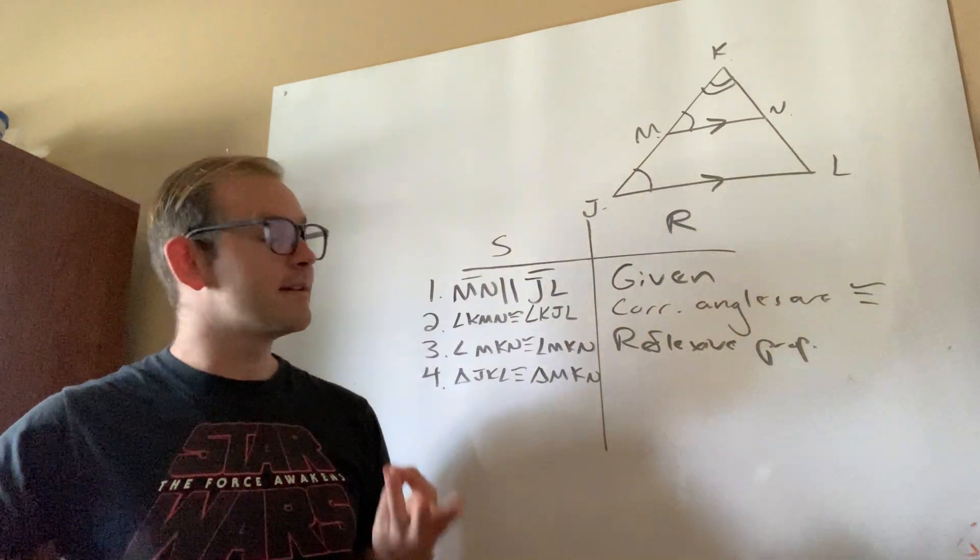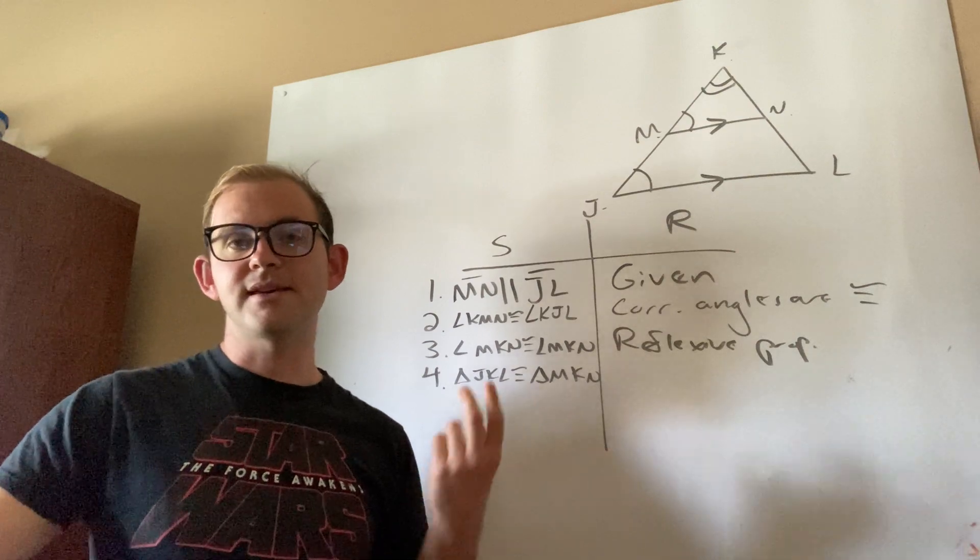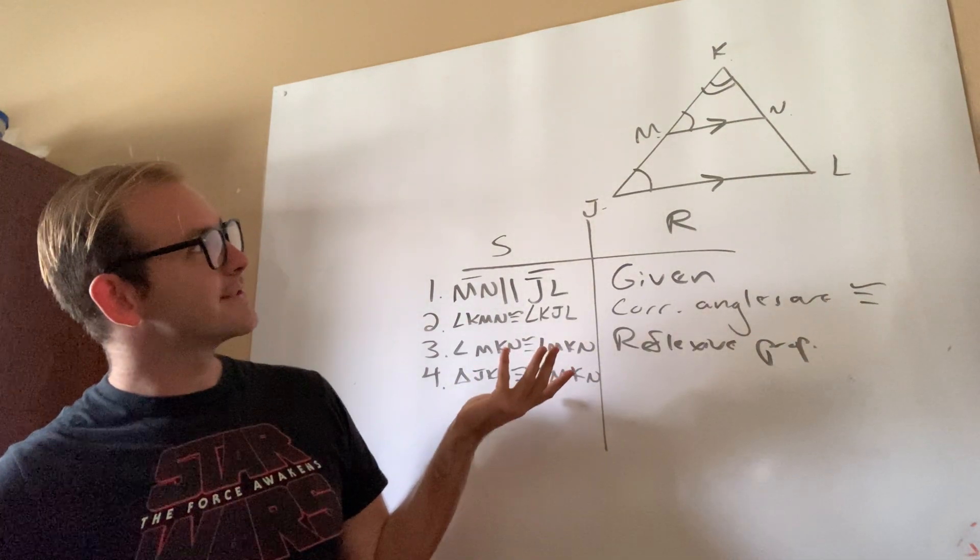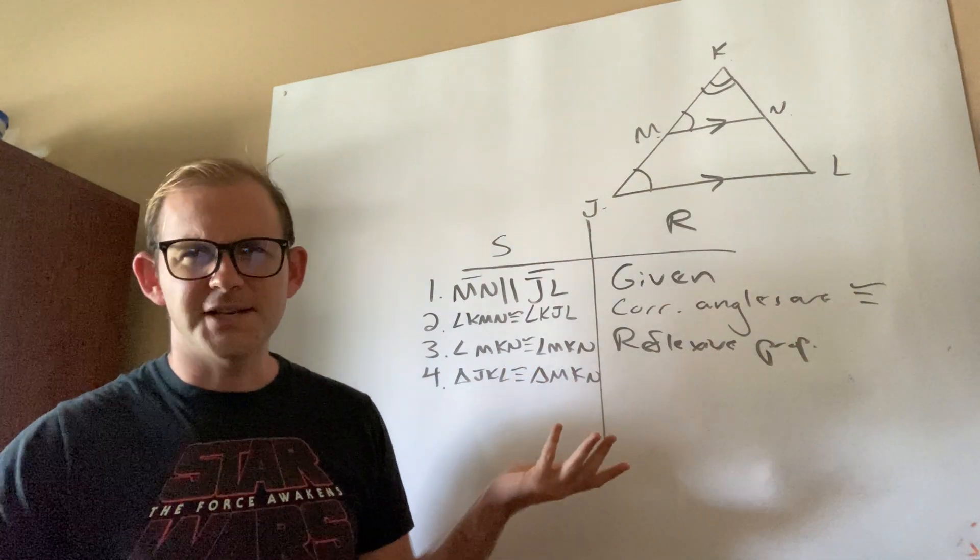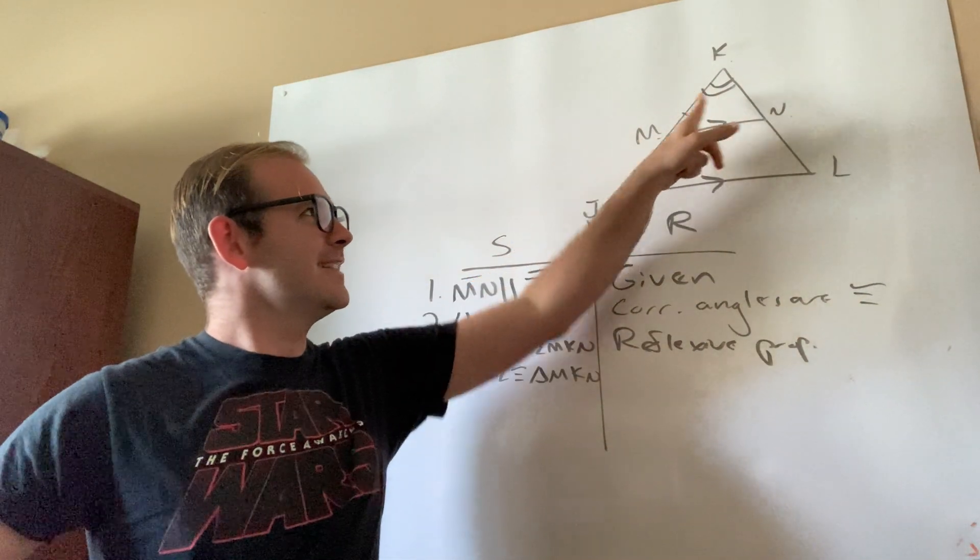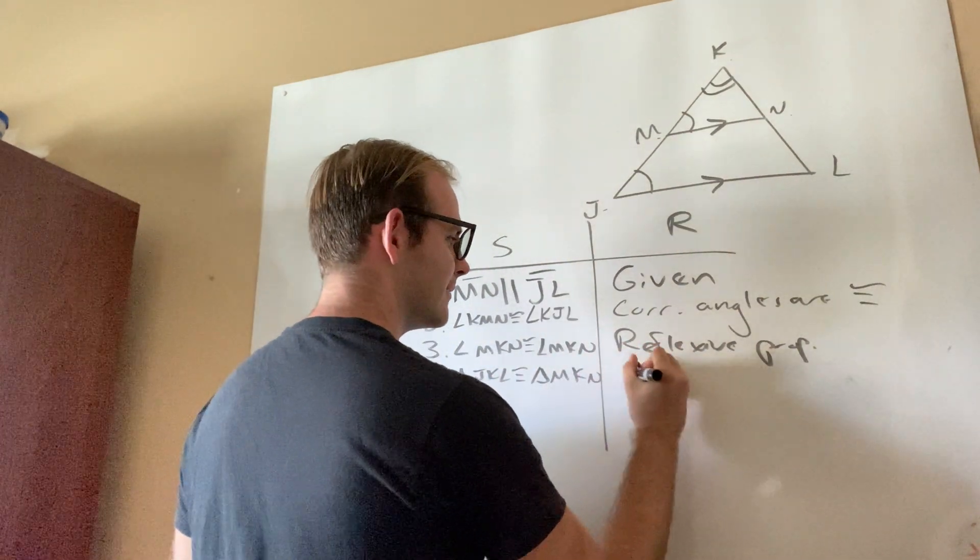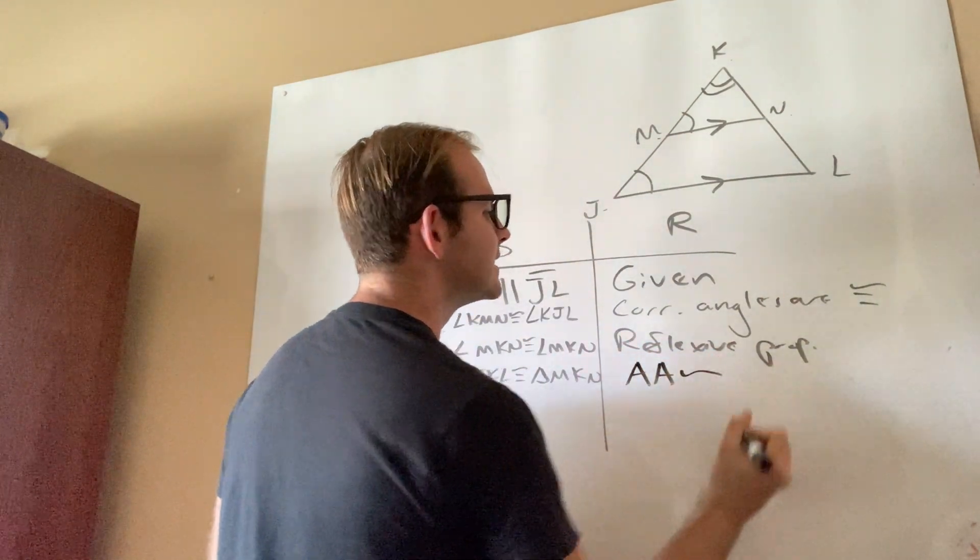There are only three choices, guys, for similarity. It could be SSS, it could be SAS, or it could be AA. What do you actually see in this problem? Well, I don't know about you, but I see an angle and I see an angle. So what that tells me is that these two triangles are similar by angle-angle similarity.